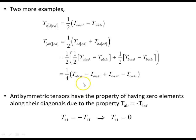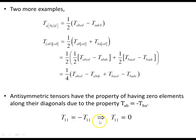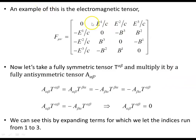Anti-symmetric tensors have zero elements along their diagonals. This follows from the anti-symmetric property: permuting the indices produces a minus sign, so T_{11} = −T_{11}, which can only be satisfied if T_{11} = 0. All diagonal entries must be zero. An example is the electromagnetic tensor, where F_{00} = 0, F_{11} = 0, F_{22} = 0, F_{33} = 0 along the diagonal.